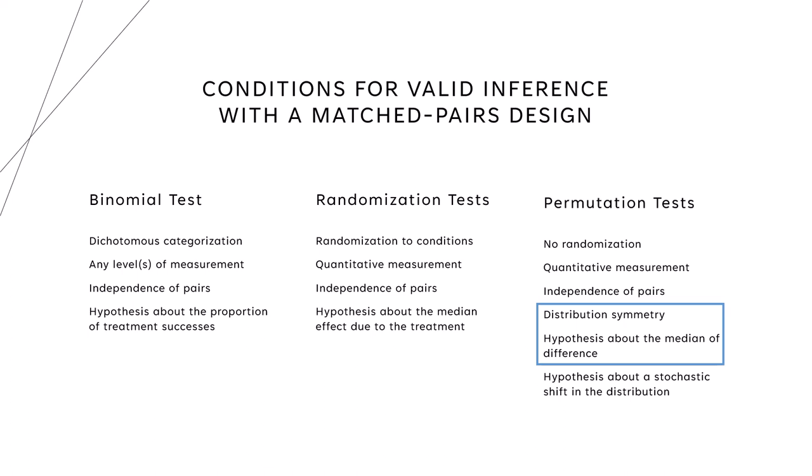And now we have two possible hypotheses. If there's a rational reason to believe that we have distribution symmetry, we can test a hypothesis about the median of differences, just like we can in a randomization test. We also needed symmetry for the randomization test, but it was implied by the fact that we randomized.